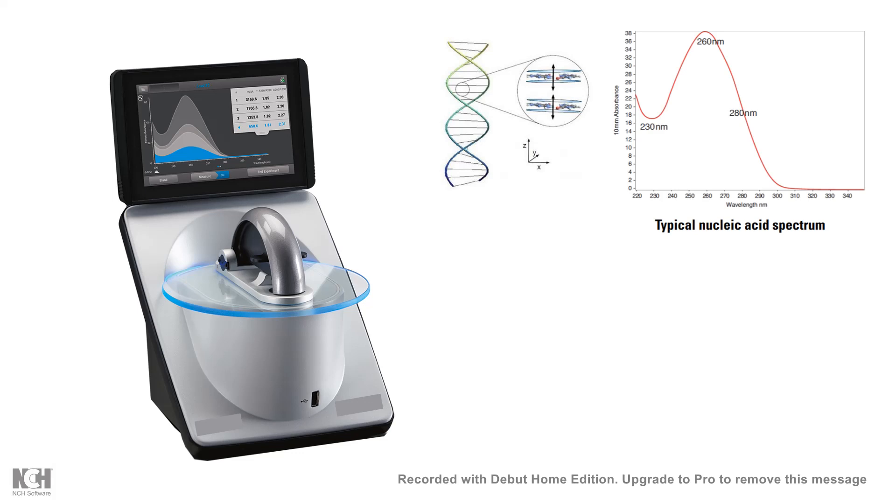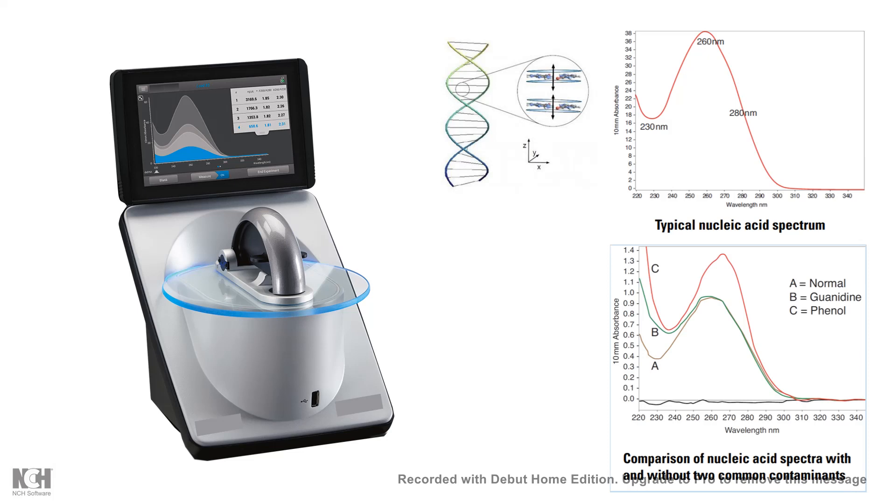The base stacking interaction, the pi cloud of the bases absorb UV light. So that is how we can get a spectrum like this. DNA or RNA absorbs maximally at 260 nanometer, and we can measure the purity of the DNA by the spectrophotometer mediated measurements.